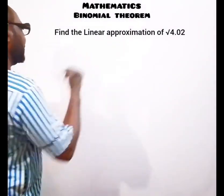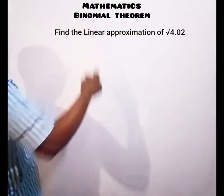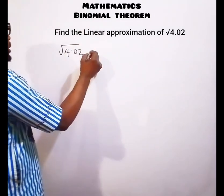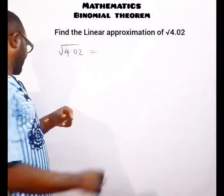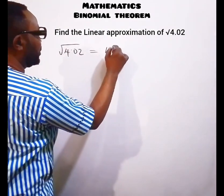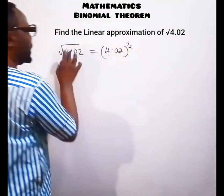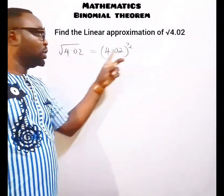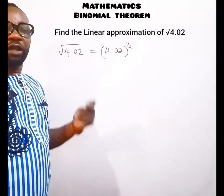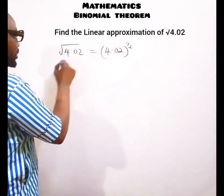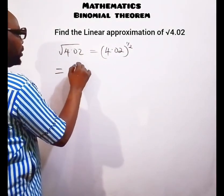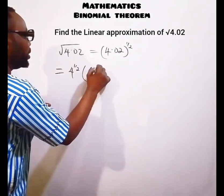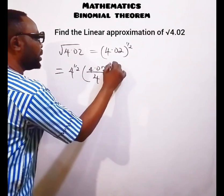The next question asks us to find the linear approximation of the square root of 4.02. This is equivalent to 4.02 raised to the power of one-half. We can factor this as 4 raised to the power of one-half, multiplied by the bracket of 4.02 over 4, raised to the power of one-half.